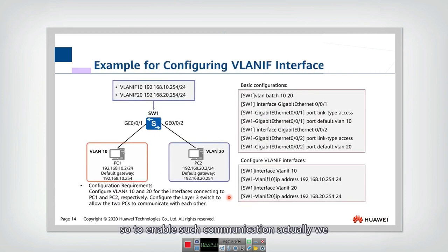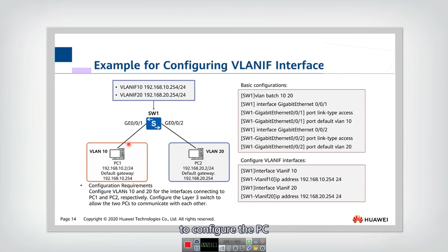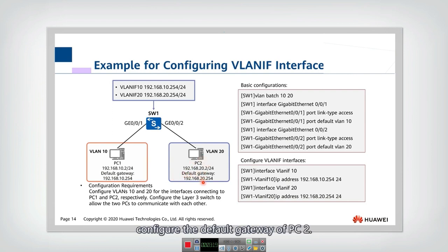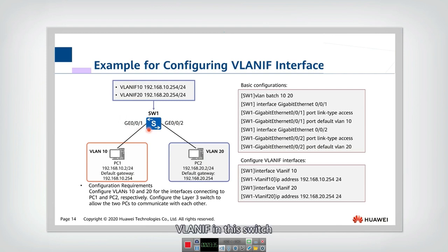To enable such communication, we need to configure the different modules in this Layer 3 switch. First, we need to configure the PC to set the default gateway to this IP address. We also need to configure the default gateway of PC2. These two IP addresses are actually the IP addresses of VLAN interface 10 and VLAN interface 20. The key configuration is in the switch.